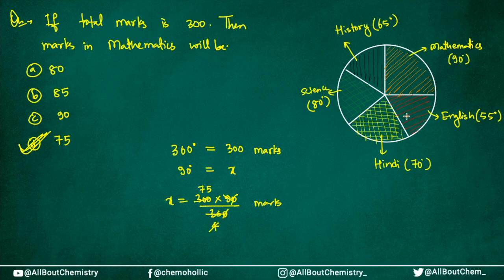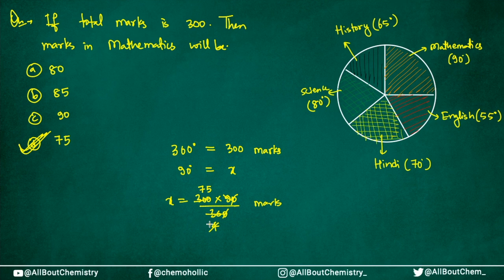So 75 marks is the marks in mathematics if the total marks is 300. Similarly, you can find marks in all subjects the same way — for English, put 55 degrees; for Hindi, put 70 degrees; for history and science, do the same. It's as simple as that. This is how you use the trick to solve easily without any formula.